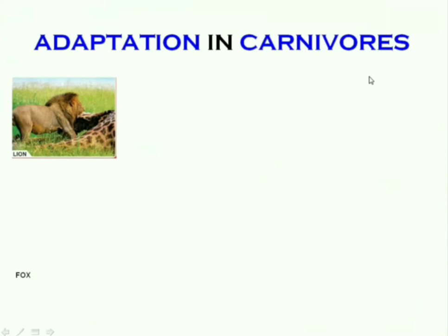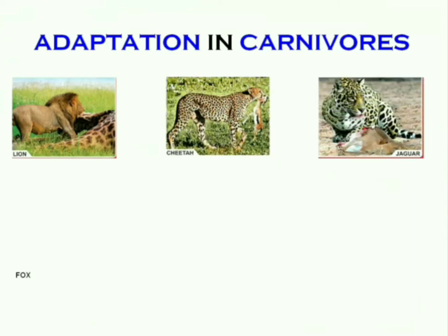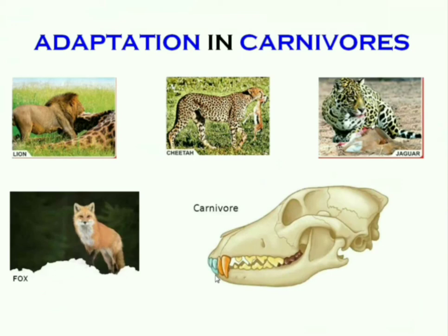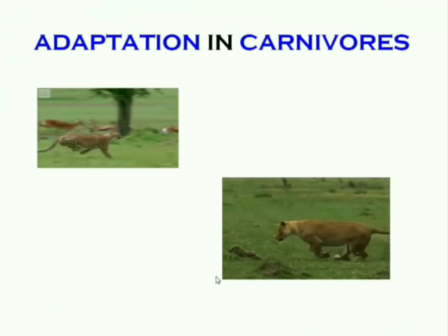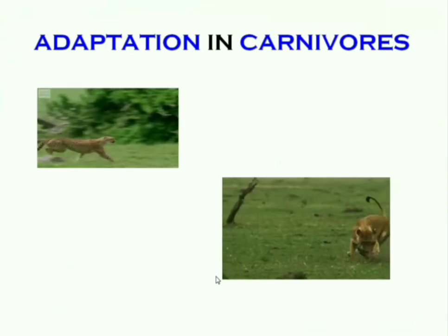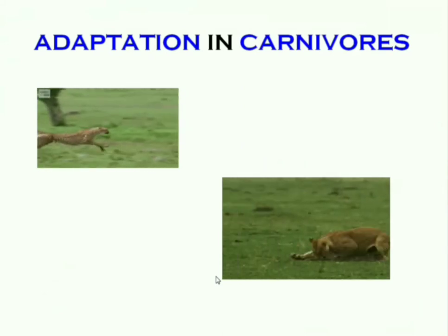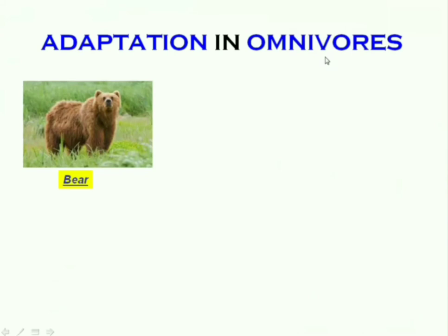Carnivores are animals that eat the flesh of other animals — examples are lion, cheetah, jaguar, and fox. Carnivores have sharp and long teeth in the front to tear flesh. Some carnivores need to run very fast to catch their prey, and such animals have very strong legs.